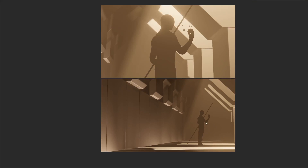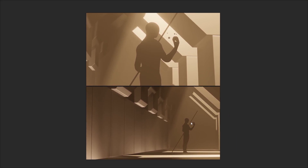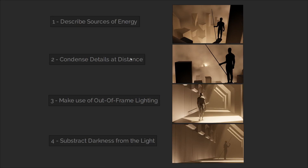Just to wrap up what we've talked about, I've condensed this into four ideas. Number one: describe the sources of energy. Number two: condense details at distance. Number three: make use of lighting out of frame. And number four: subtract darkness from the light. This is certainly not a comprehensive breakdown of how to get the best looking lighting, but if you've ever had trouble with lighting and composition, hopefully these simplified points might help you in composing your scenes.